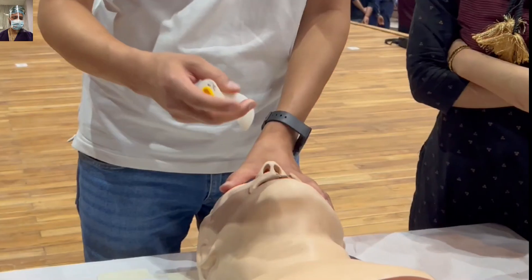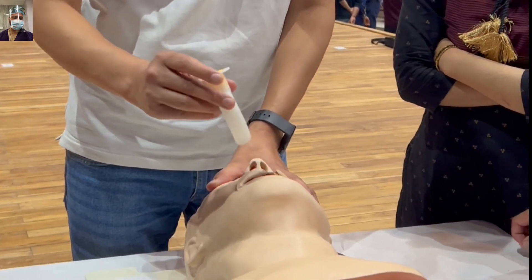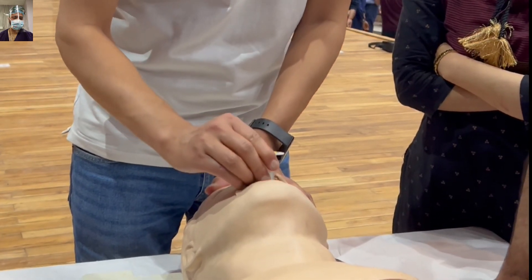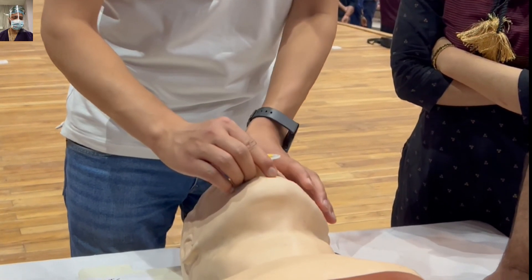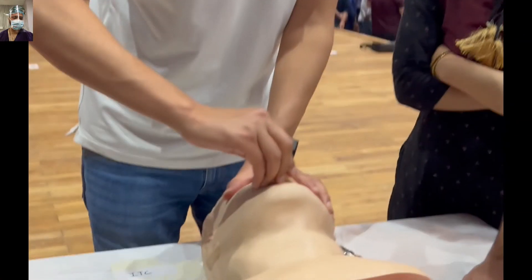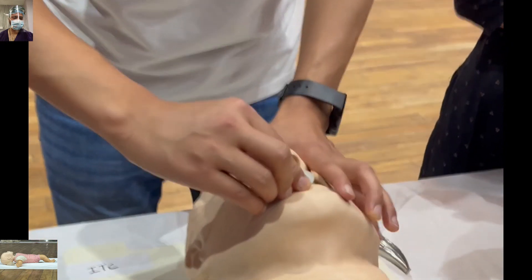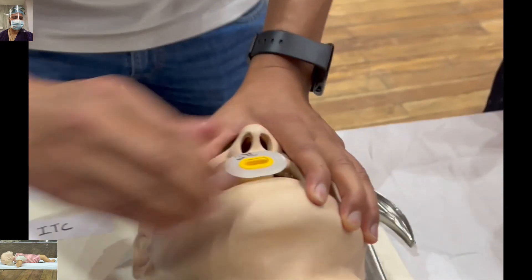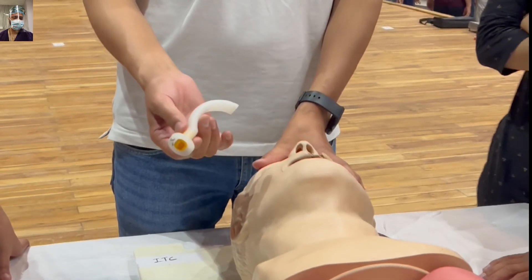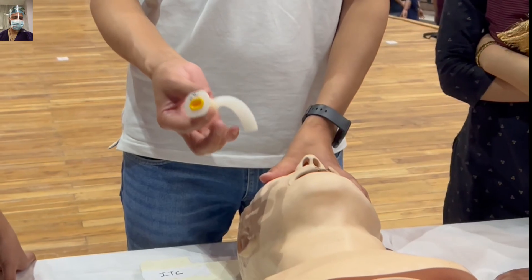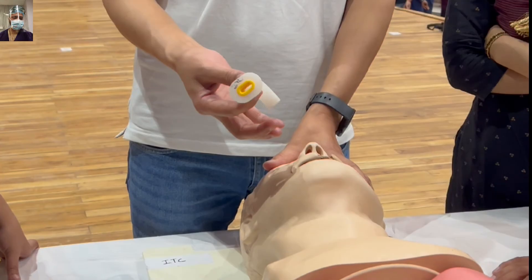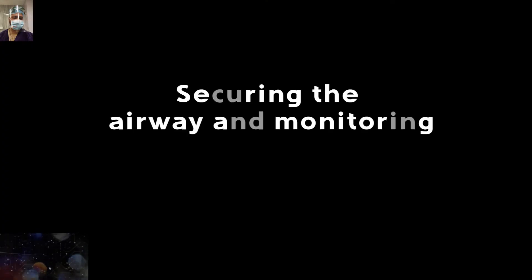Standing at the head end of the patient, hold the Guedel's Airway with the tip pointing upward toward you. Insert it into the mouth, and once it has passed the tongue, rotate the entire Guedel's Airway by 180 degrees, as being demonstrated in this video. After rotating, secure the airway — you can tie it or fix it with tape — and then begin ventilating the patient.